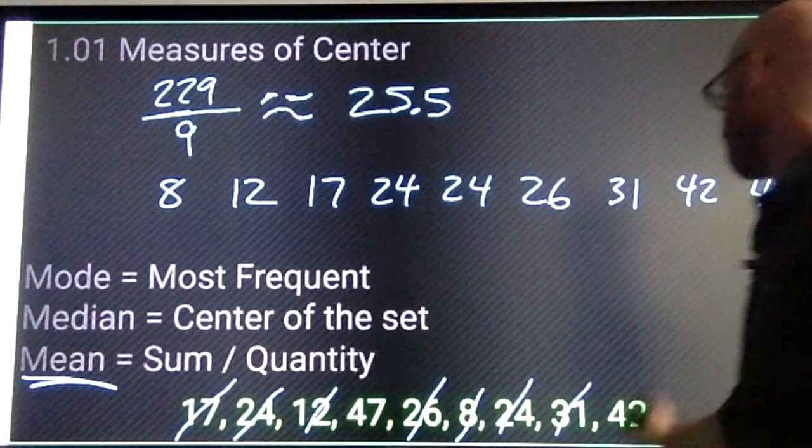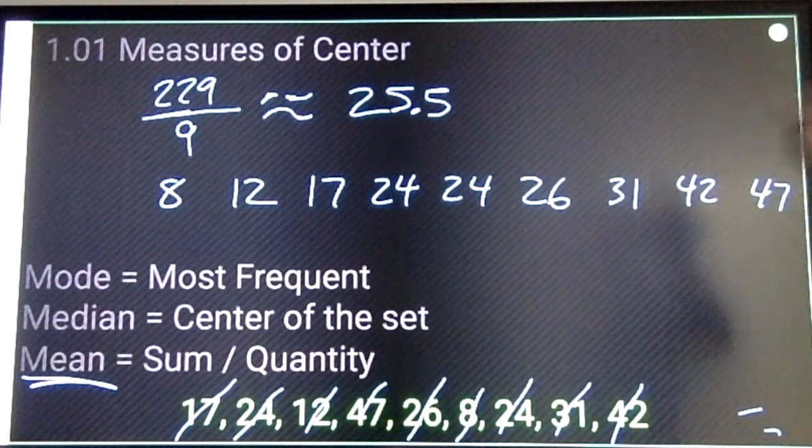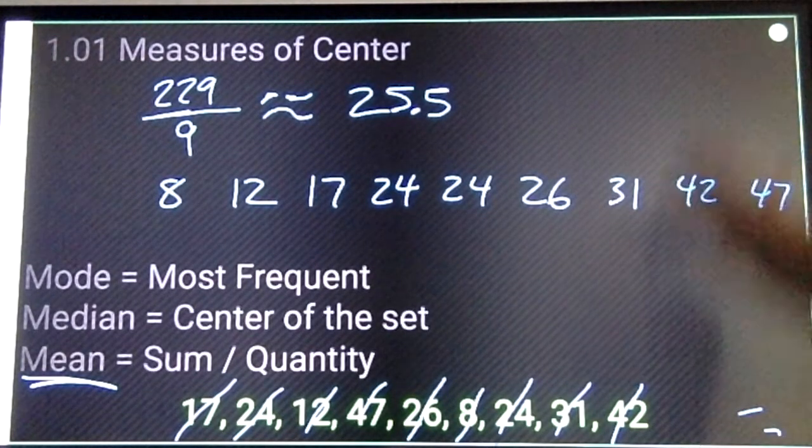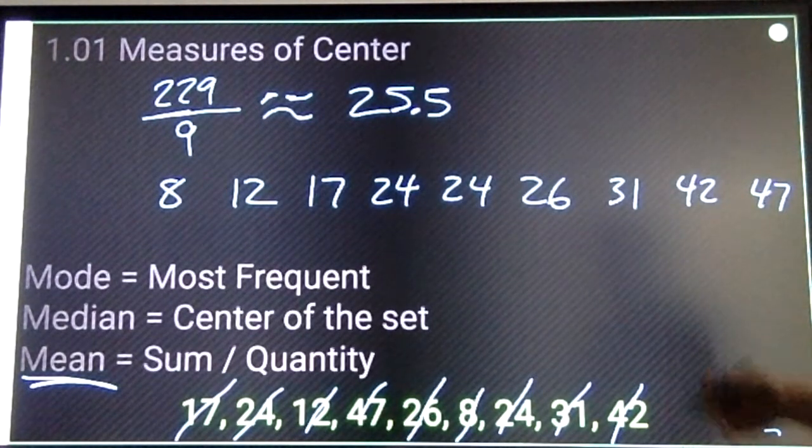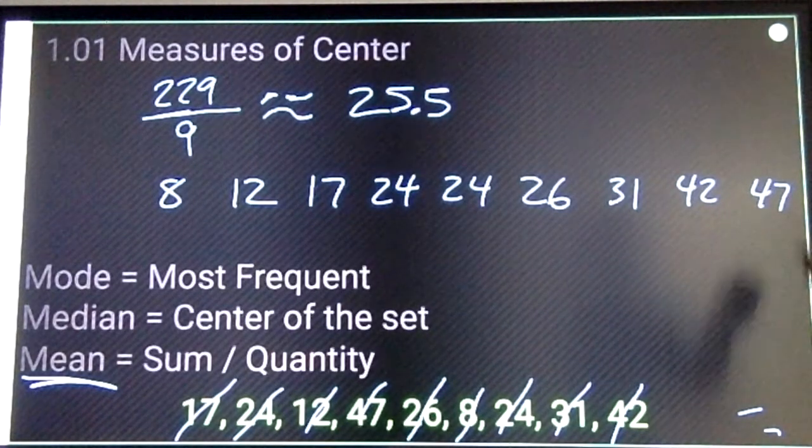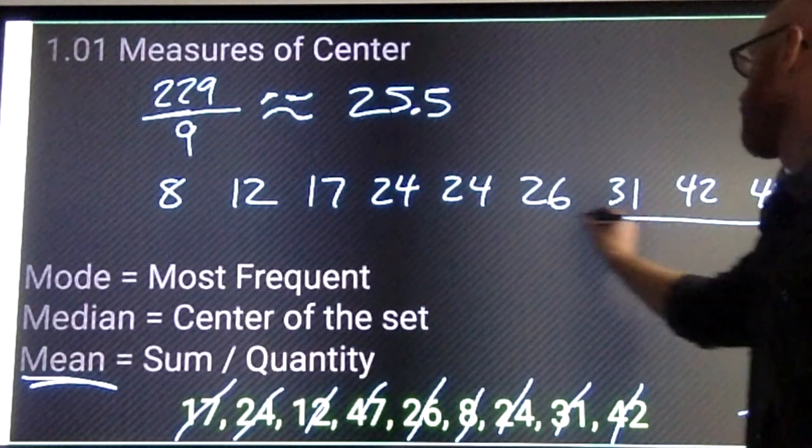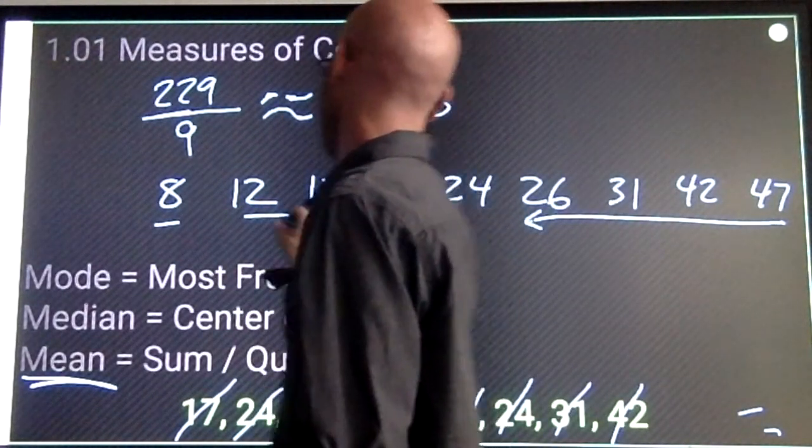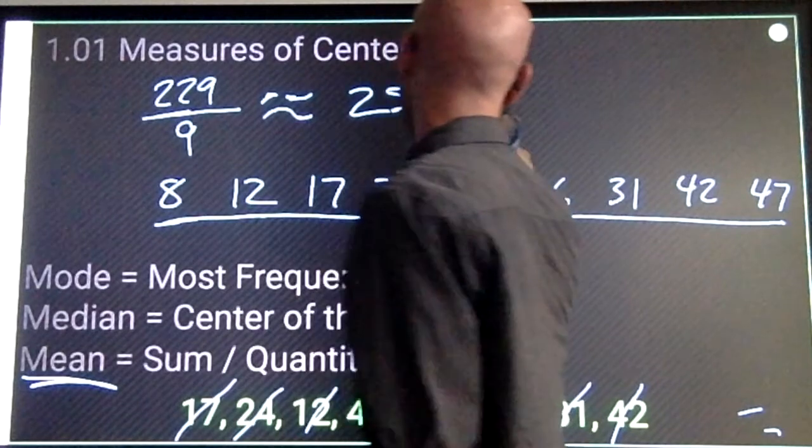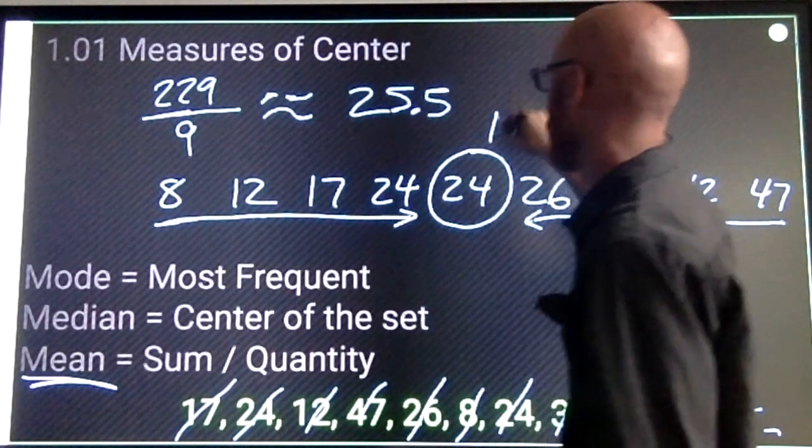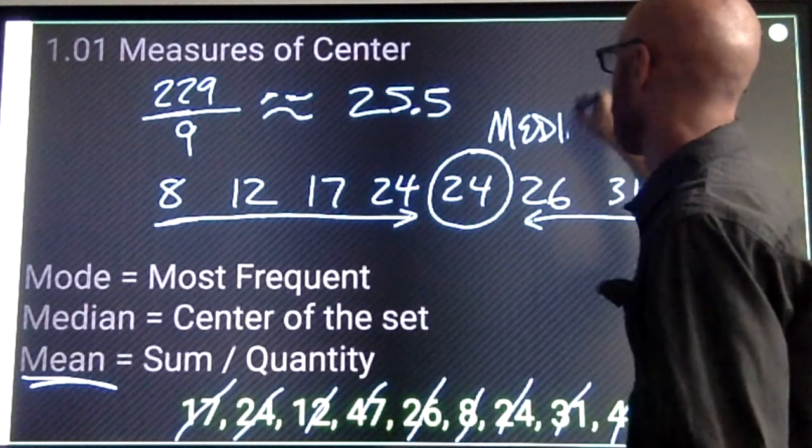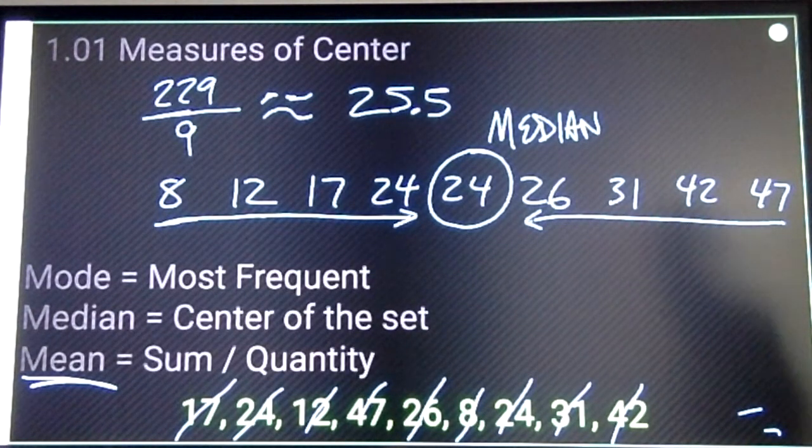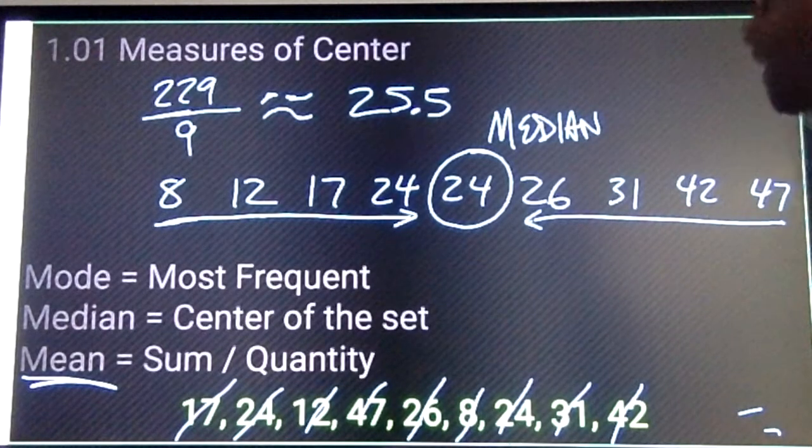Two, four, six, eight, nine. All nine numbers. Median is, what is the center of the set? So we've got four numbers here, four numbers here. The center of my set is 24. That's the median, the number that's in the center, after you line all your numbers up in order.